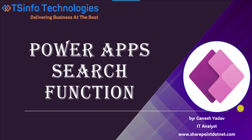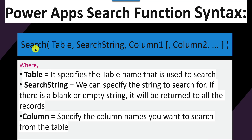Next, I will show you the PowerApps search function syntax. The syntax is: Search(Table, SearchString, Column1, Column2). Here, Table specifies the table name used to search. SearchString specifies the string to search for — if there is a blank or empty string, it will return all records. Lastly, Column specifies the column names you want to search from the table.